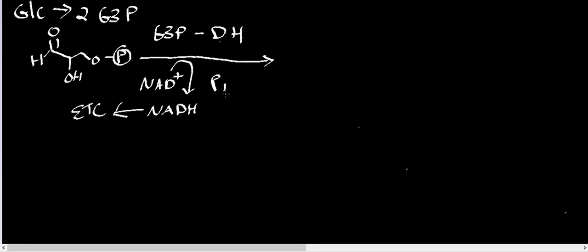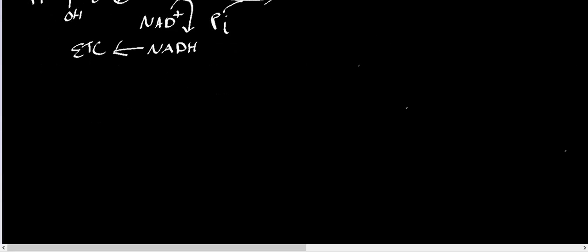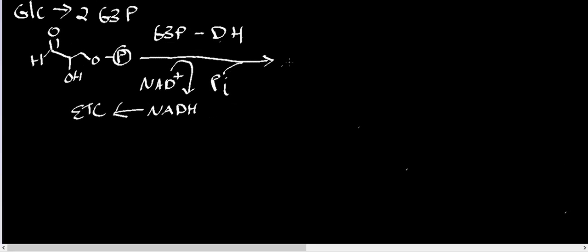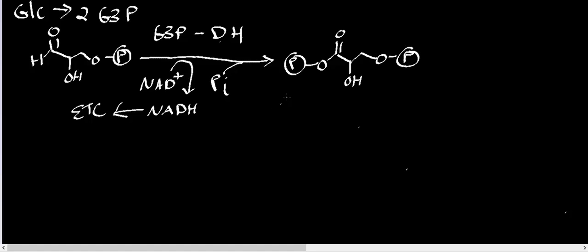Also, what this enzyme is going to do is take inorganic phosphate and incorporate it into the molecule. So we end up with 1,3-bisphosphoglycerate.